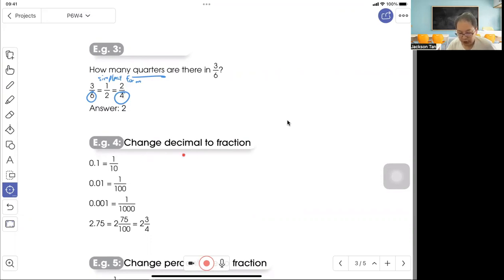Example 4: Convert decimal to fraction. 0.1 is 1 out of 10. 0.01 is 1 out of 100. 0.001 is 1 out of 1000. For 2.75, that means 2 whole, 75 out of 100. In simplest form, divide by 25: 2 whole, 3 out of 4, or 2 and three-quarters.